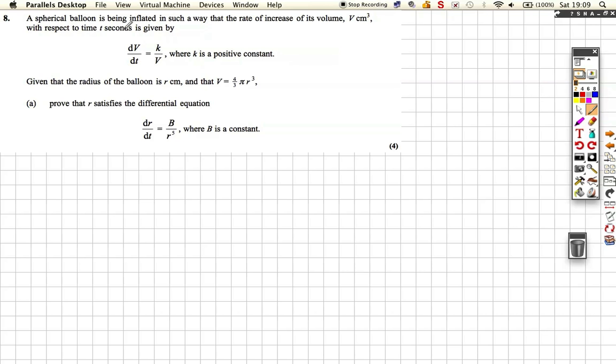In this one, we've got a lot of information about a balloon which is being blown up or inflated, and the rate of change of the volume with respect to time is given by k over v, where k is a positive constant. They've given us the radius of the balloon, and they've told us this is a sphere, so the volume is given by 4 thirds pi r cubed.